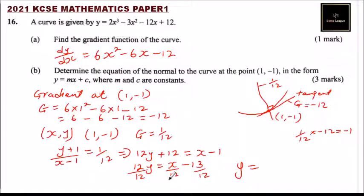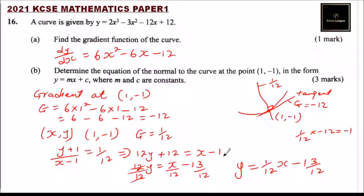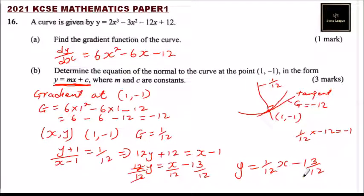Dividing throughout by 12, the equation becomes y = (1/12)x - 13/12. This is in the required form y = mx + c, where m = 1/12 (the gradient) and c = -13/12. By completing this you should be able to score three marks.